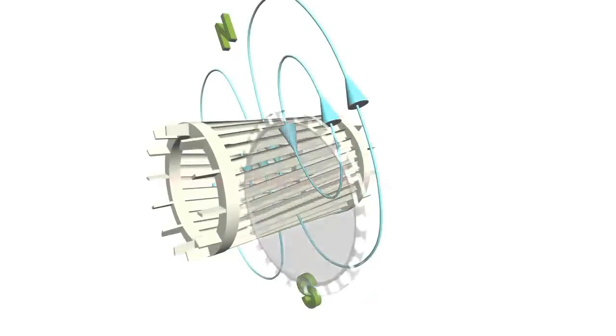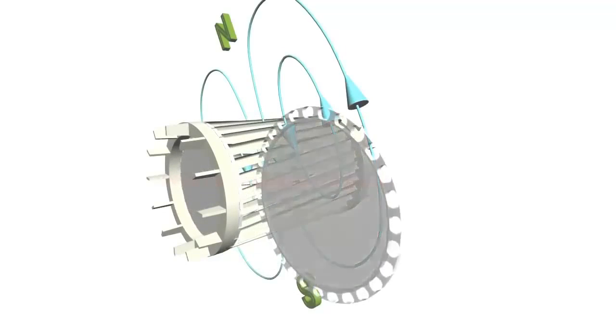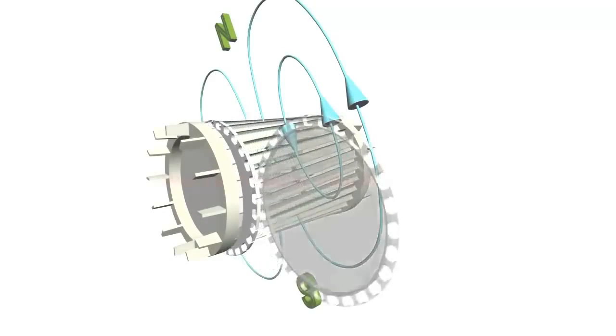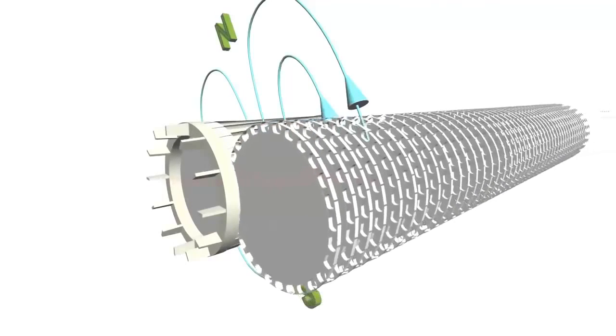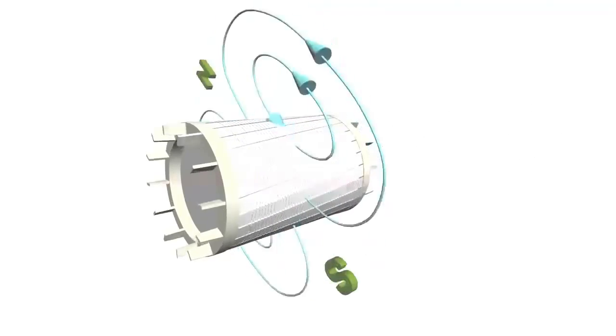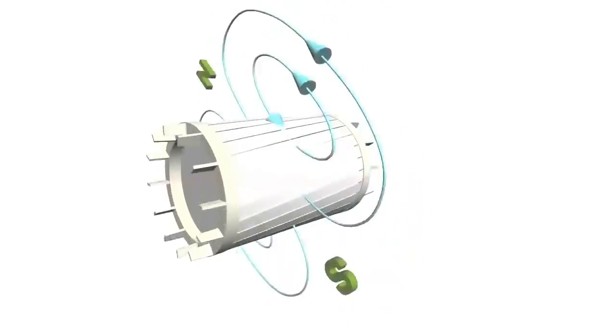Electricity is inducted in the rotor by magnetic induction rather than direct electric connection. To aid such electromagnetic induction, insulated iron core lamina are packed inside the rotor. Such small slices of iron make sure that eddy current losses are minimum. This is another big advantage of a three-phase induction motor. It is inherently self-starting.